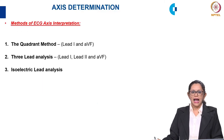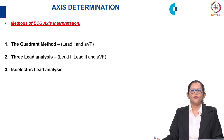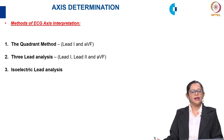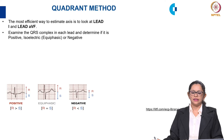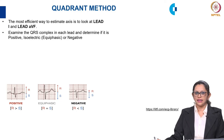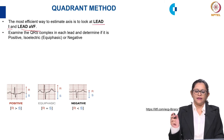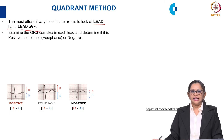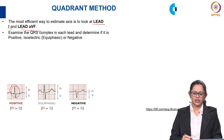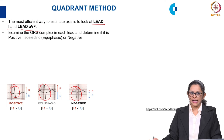Three methods are identified for axis determination: first is the quadrant method, second is the three-lead analysis, and third is the isoelectric lead analysis. The quadrant method is the most efficient way to estimate the axis, using Lead I and Lead AVF. We examine the QRS complex in these leads and determine whether it is positive, biphasic, or negative, and based on this we determine the axis of the ECG.